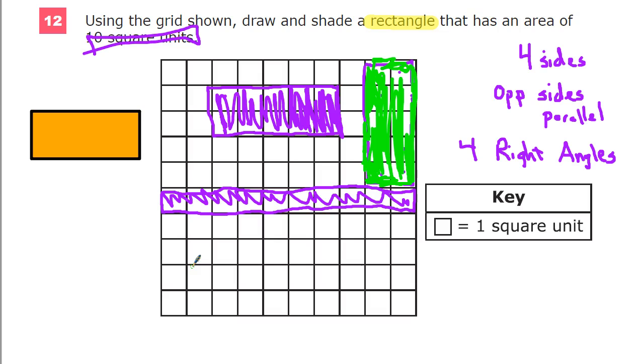It doesn't say put it in the middle. It doesn't say it has to be oriented in a specific way, like it has to be wider than it is long or longer than it is wide or anything like that. It just says make a rectangle. Make sure it has an area of 10 square units. So make sure there's 10 there. Make sure you have a rectangle. You get a few options. All of those options will be correct.